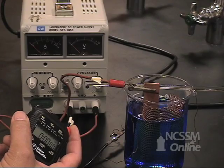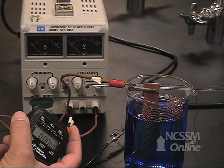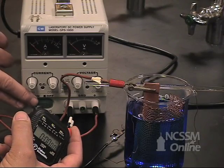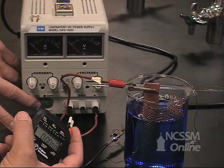We're going to need to time how long we've run the current through the cell. We'll use a stopwatch to tell us that. When we start the current, we'll start the time.